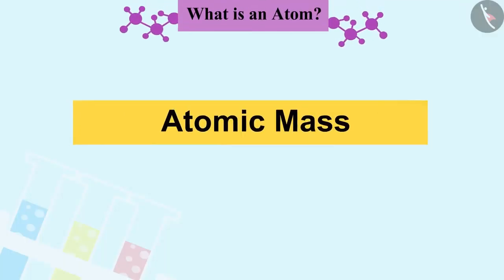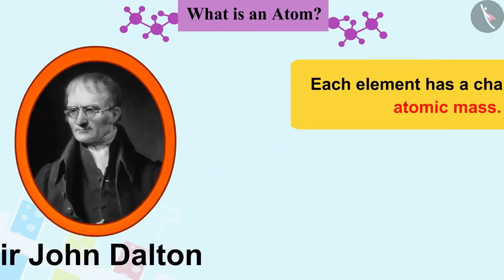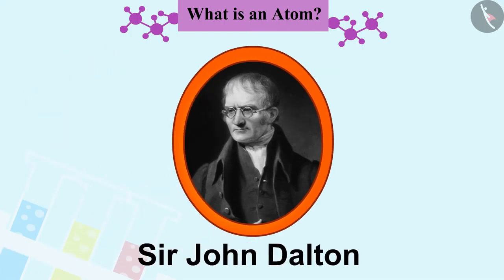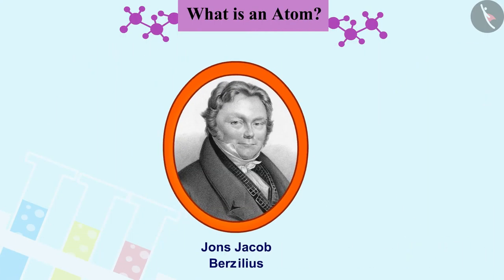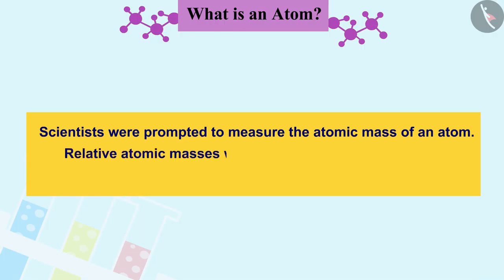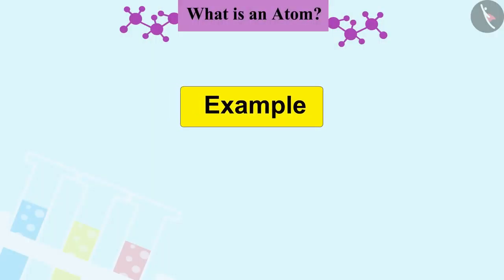Let us now discuss atomic mass. According to Dalton, each element has a characteristic atomic mass. Inspired by Dalton's theory, scientists were prompted to measure the atomic mass of an atom. Relative atomic masses were determined using the laws of chemical combinations and the compounds formed. Let us try to understand it by an example.